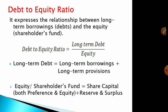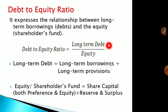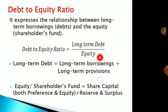Starting with debt to equity ratio — as the name suggests, it is a relationship between debt and equity. The formula is long-term debt divided by long-term equity. Whenever we talk about debts in solvency ratios, we are talking about long-term debts, because short-term debts are part of current liabilities and are used in calculating liquidity ratios. Equity generally means the capital invested in the firm.